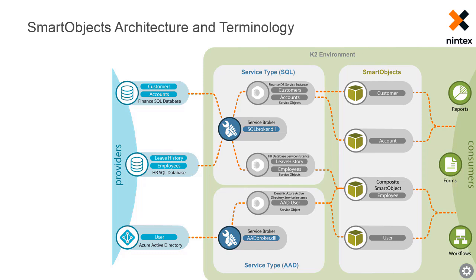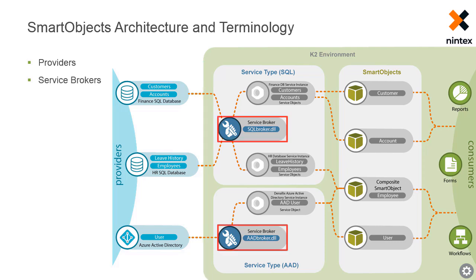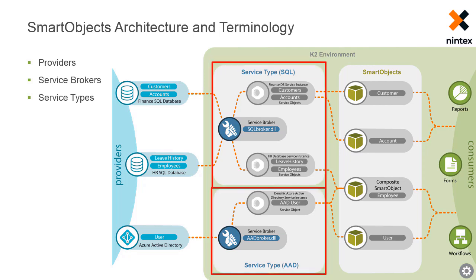Let's take a look at some terms used in this environment. Providers are the line of business or back-end systems that you wish to expose as smart objects. The ability to connect to many of these provider systems comes out of the box with K2. A service broker is a DLL file that contains the logic to interact with the technology. The DLL contains all the code to interact with the provider and is provider-specific, so there is a different broker to connect to a SQL database compared to connecting to Azure Active Directory. The service broker translates the provider's entities into service objects and vice versa. The same broker can be used to connect to multiple instances of the same type of data, so we can reuse the same SQL broker to connect to both the Finance SQL database and the Human Resources SQL database. A service type registers the service broker in the K2 environment so that administrators can register service instances of that broker. It is just a pointer to which DLL to use.